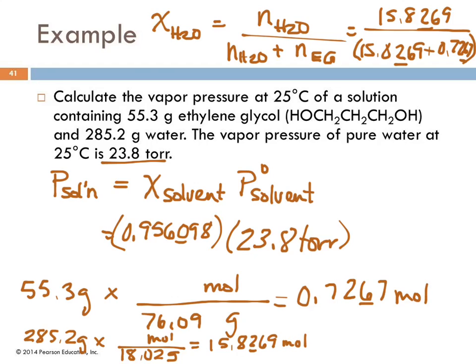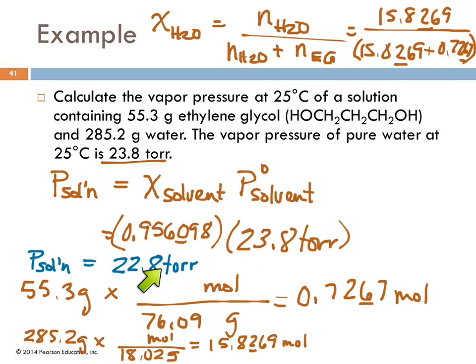Taking the mole fraction 0.9561 times 23.8 torr gives the vapor pressure of the solution: 22.8 torr. This answer has three significant figures.